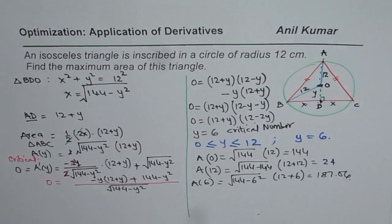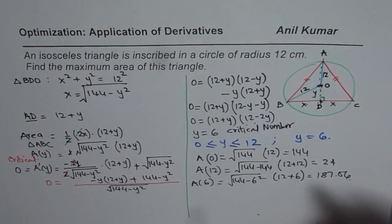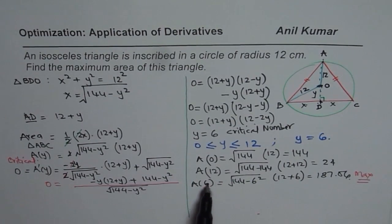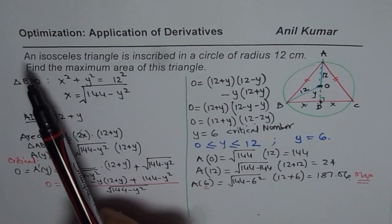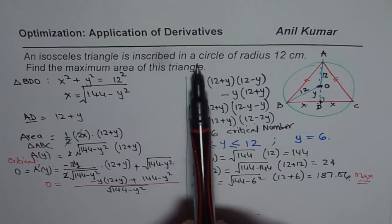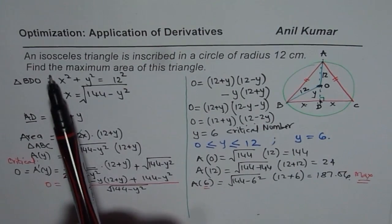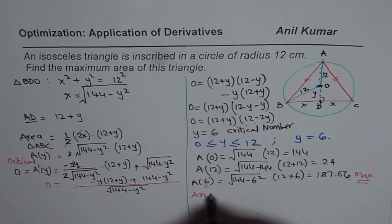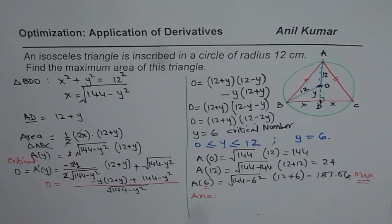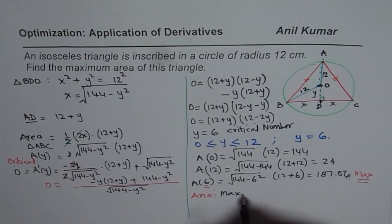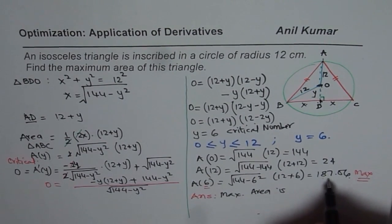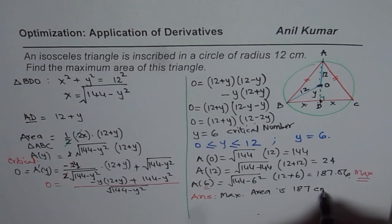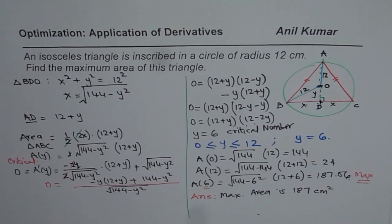Comparing these values, the maximum is for Y equals 6. The question asks for the maximum area of an isosceles triangle inscribed in a circle of radius 12 centimeters. So the answer is maximum area approximately 187 centimeters squared.